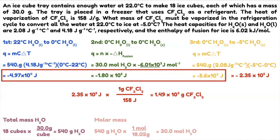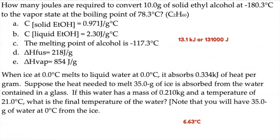Now try these two problems on your own. I included the answers. Number one: how many joules are required to convert 10 grams of solid ethyl alcohol at negative 180.3 degrees Celsius to vapor at the boiling point of 78.3 degrees Celsius? You need to get 13.1 kilojoules — or 13,100 joules. For number two, the answer is 6.63 degrees Celsius. Good luck!